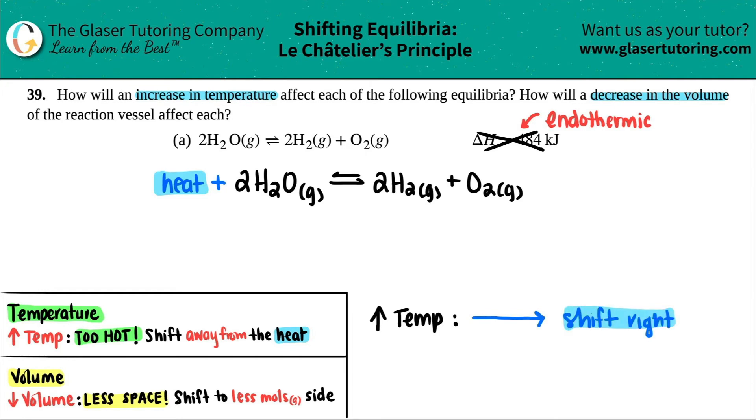Now what does that really mean? If we're going this direction, these would increase and this would decrease. That's it, basically. But for this question, we just need to say shift right or shift left.